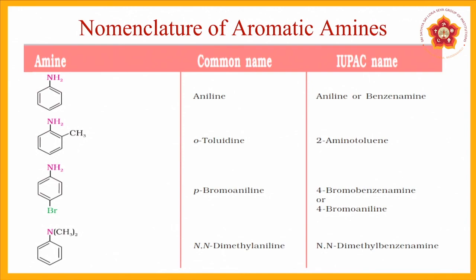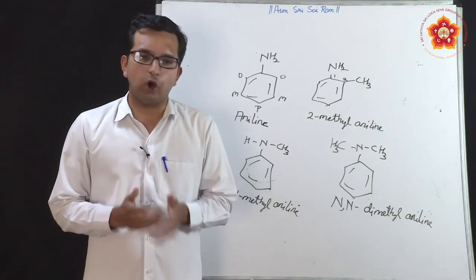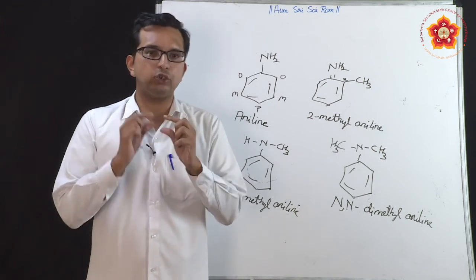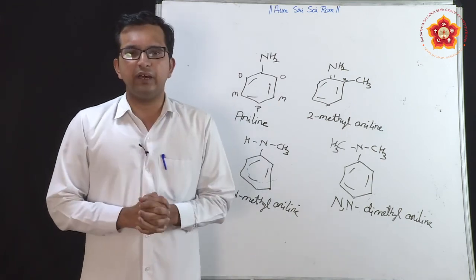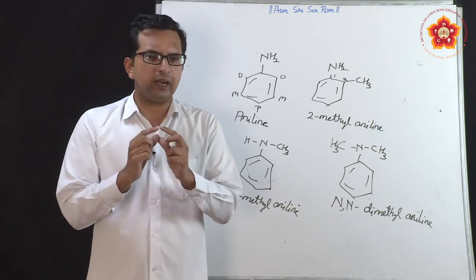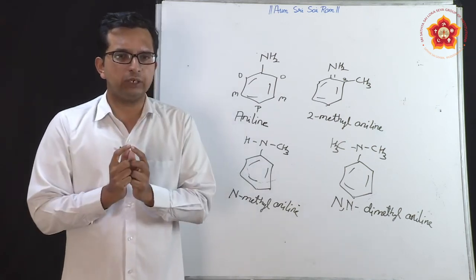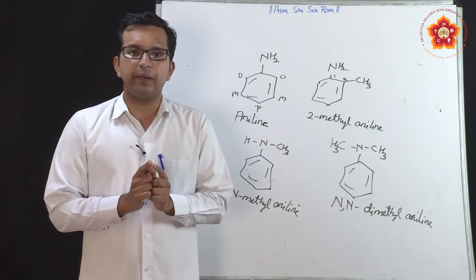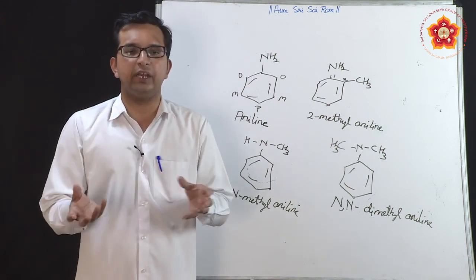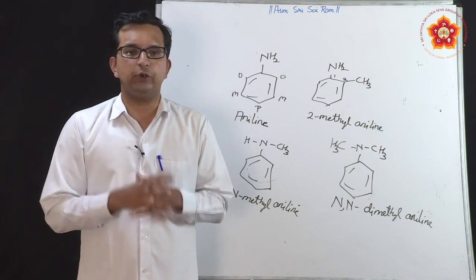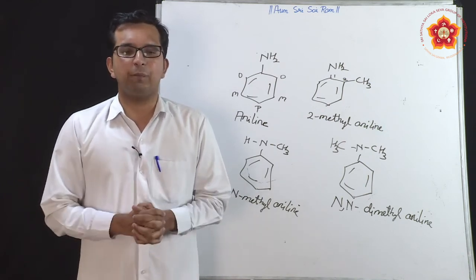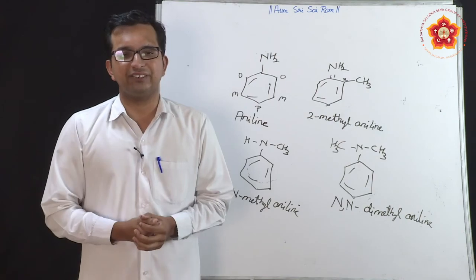This is all about the structure and nomenclature of nitrogen-containing organic compounds. Remember that nitrogen becomes the central atom for nomenclature, and if substituents are present on nitrogen, they must be specified as N- or N,N- depending on how many substitutions have taken place. We will see further parts in the upcoming classes.